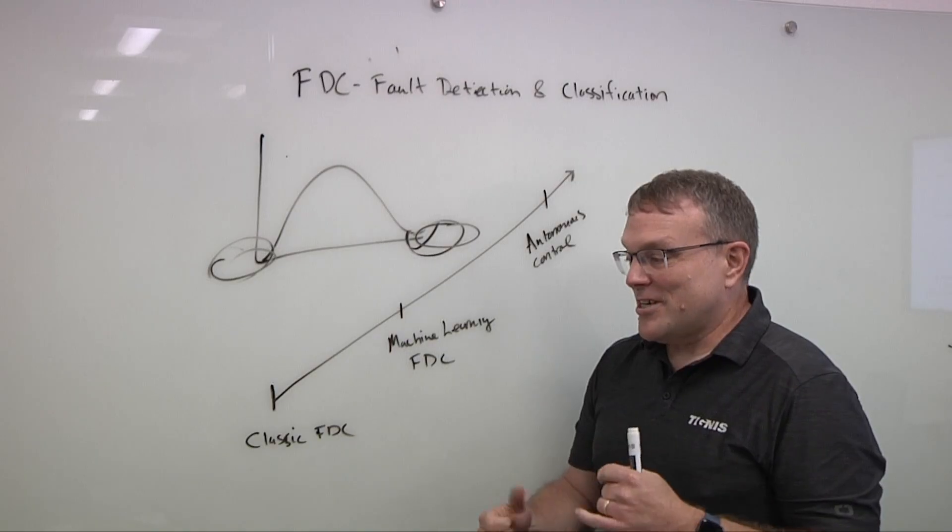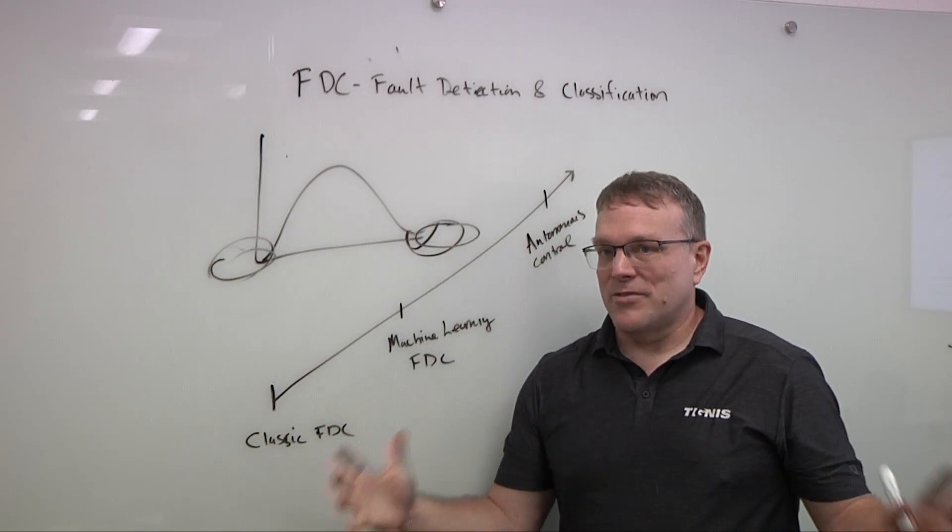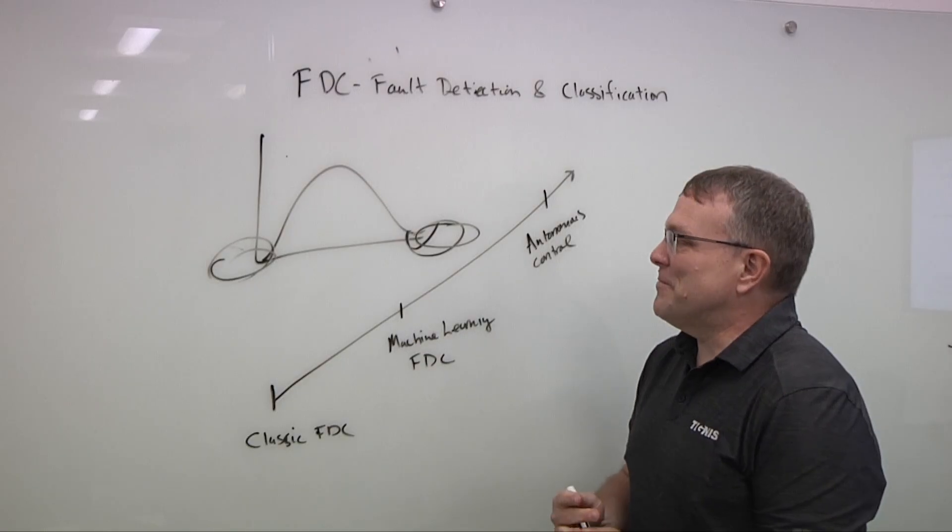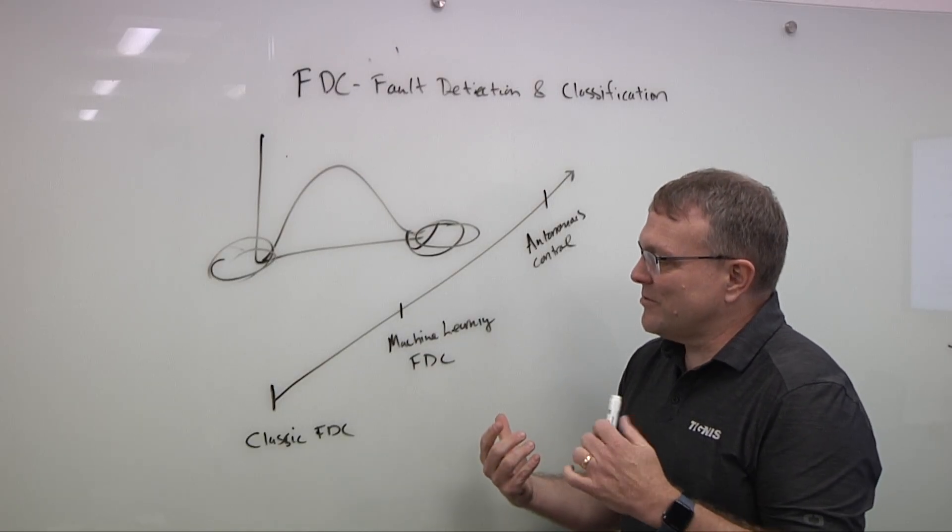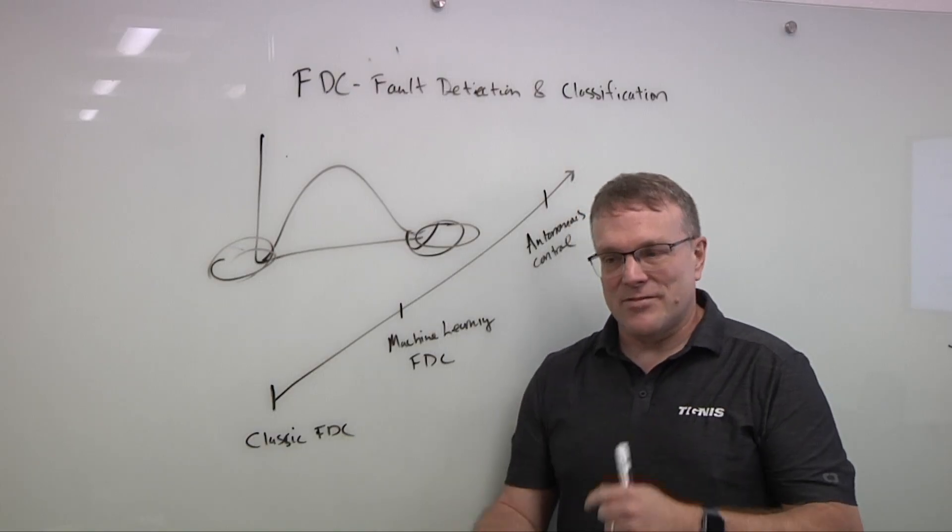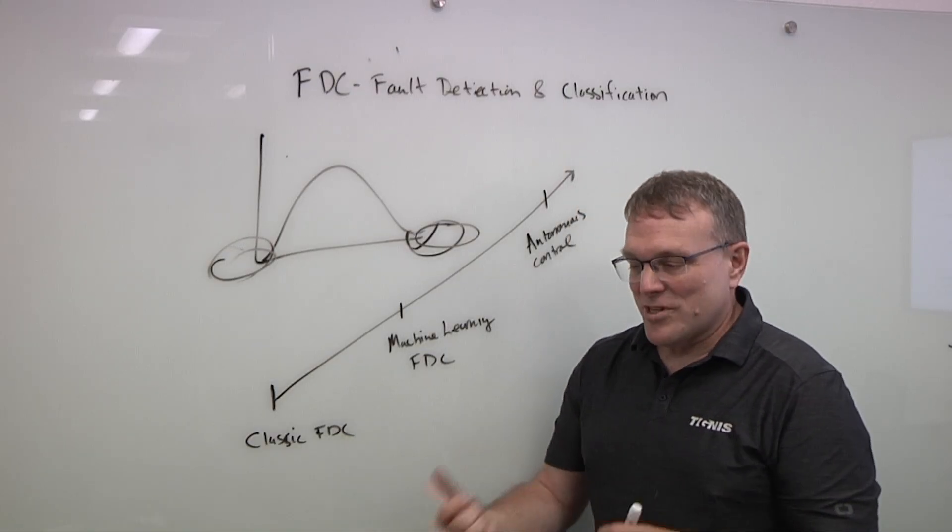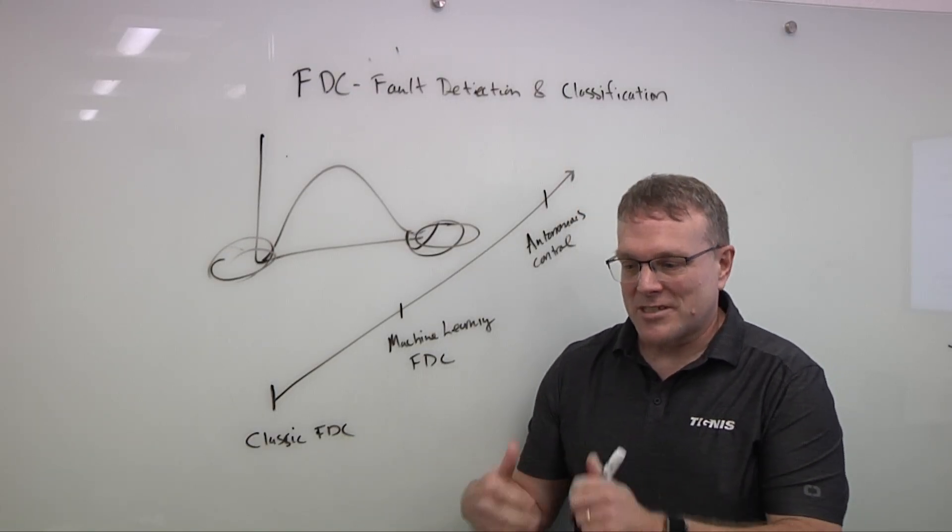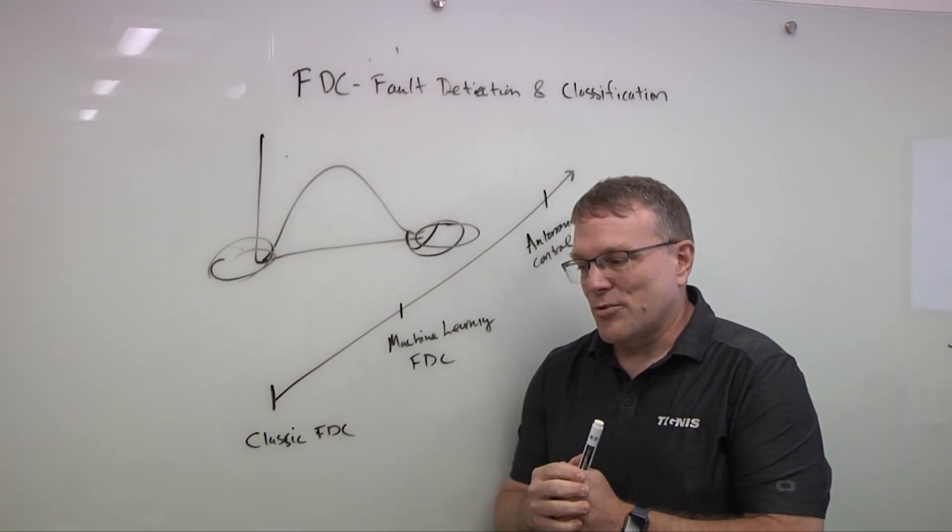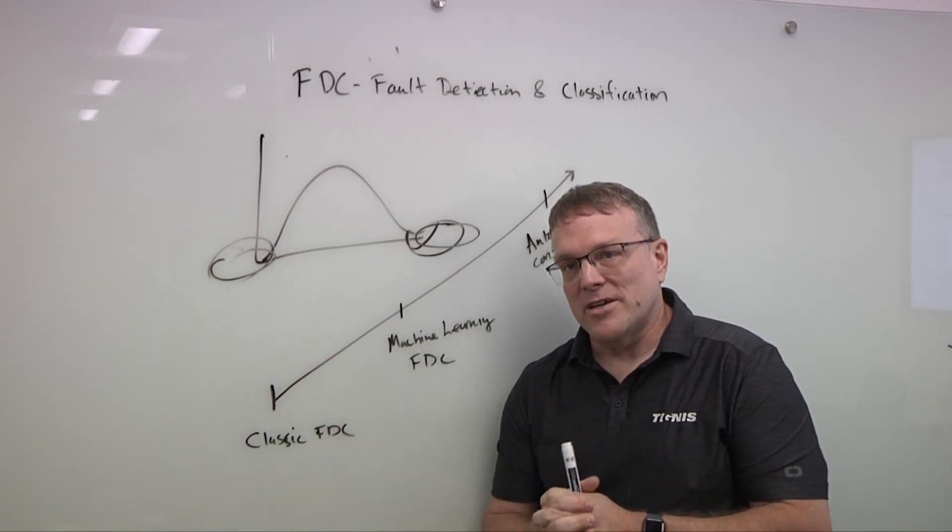So anomaly detection is incredibly powerful in terms of allowing you to detect things you didn't even know could go wrong, right? But it's challenging to deploy properly because you can also get a lot of false positives. But the good news is that sort of recent technology in this space, particularly some of the software that's sort of optimized for the semiconductor space, is getting pretty good at dealing with those false positive situations.